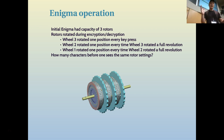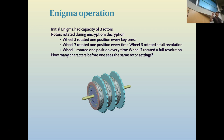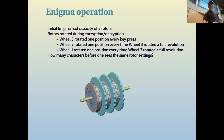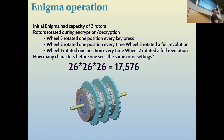How many characters can you send through this system before getting a repeating permutation? Twenty-six to the third power — that's 17,576 different combinations before the rotor position is identical to the very first position. How many messages are over 17,000 characters long? Not very many. This is why every single message — as you'll see in the movie — you pretty much have to start cracking fresh, because you're not able to reuse work from one character to the next, unless you do something smarter.